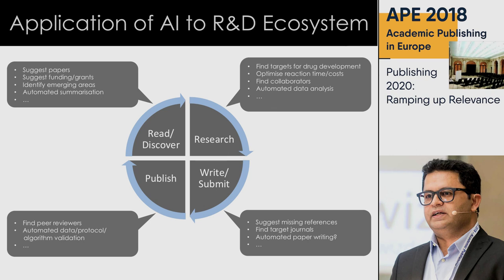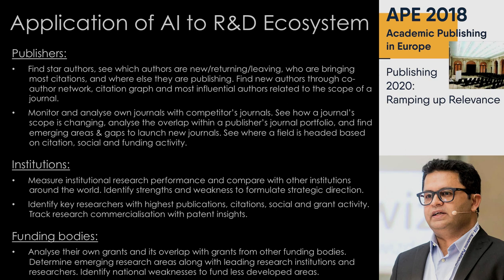During research, AI can find targets for drug development automatically, culling options that would result in more cost, and optimizing reaction time and cost — there are already products like Chem Planner and Reaxys for this. AI can also find collaborators and assist with automated data analysis. In writing and submission, it can suggest missing references — sometimes I submit a paper and get a reviewer's response saying I didn't mention a study published a month ago that is very relevant. For publishers, there are more use cases: find star authors, see which are the new and returning authors, and monitor and analyze their own journals to decide which journals to launch.